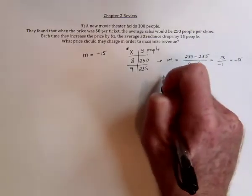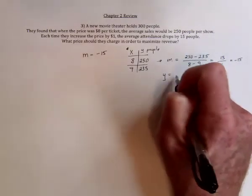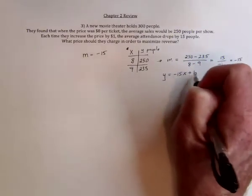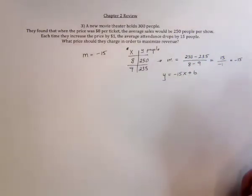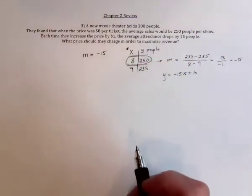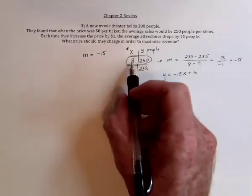Then, to find the equation of the line, because Y equals MX plus B, pick a pair of values. It doesn't matter which one. Substitute the Y and the X value.